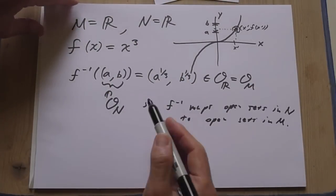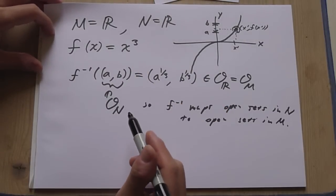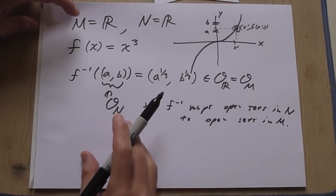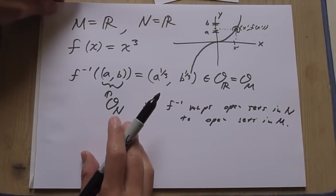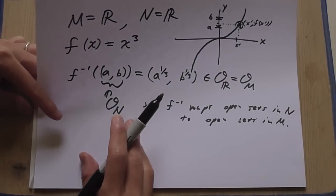So this is a simple example that shows, it's a sanity check basically, and it shows this definition of continuous is consistent with how we usually think of continuous. But what does it mean at a deeper level?